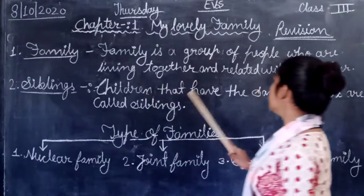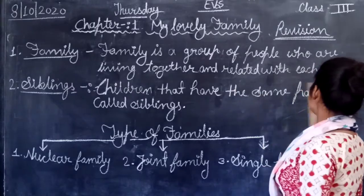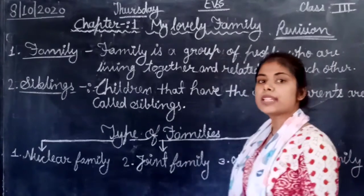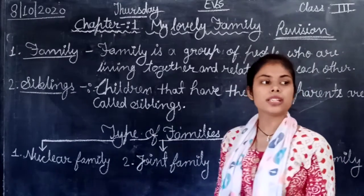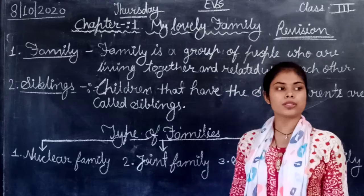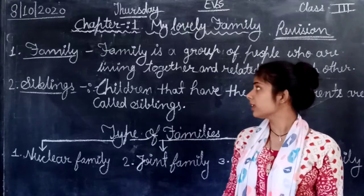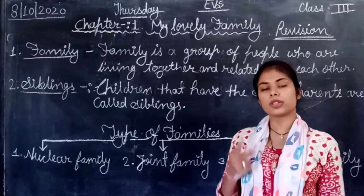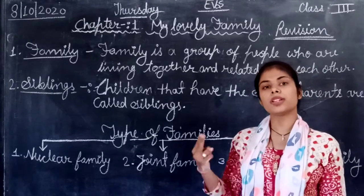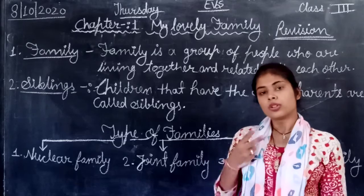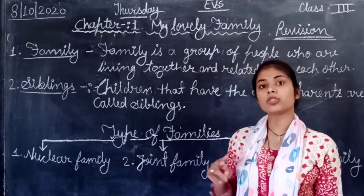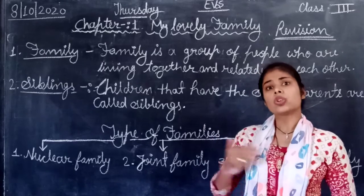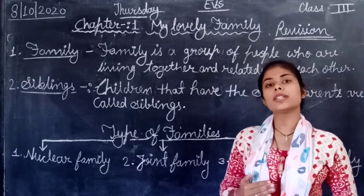Children that have the same parents are called siblings. If you have one brother and one sister, they have the same parents. So, what are siblings?